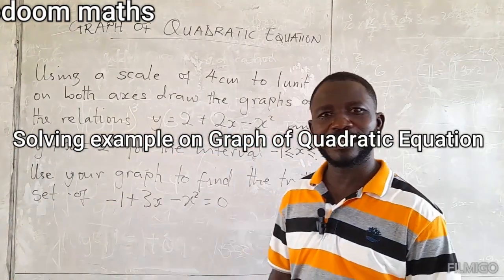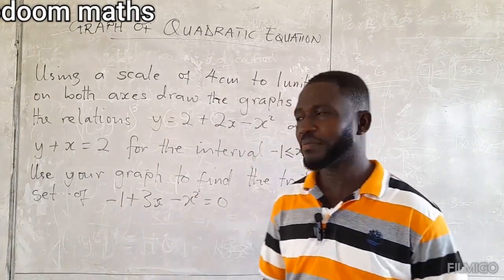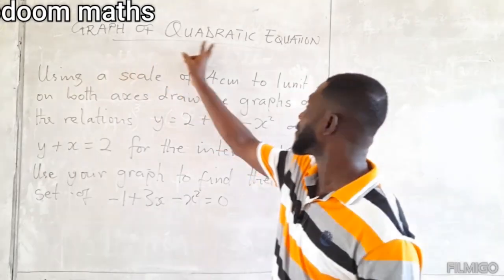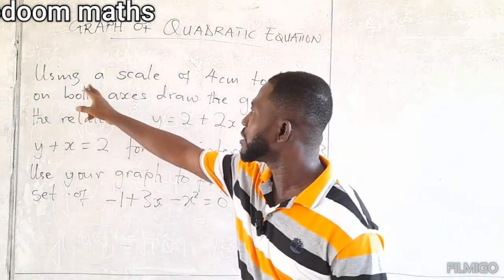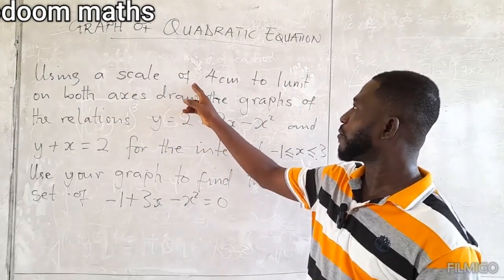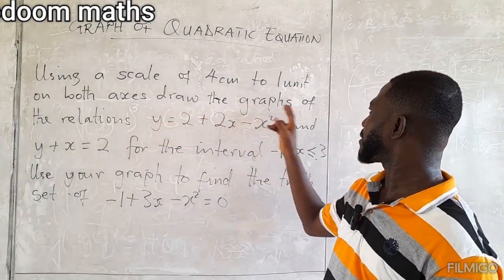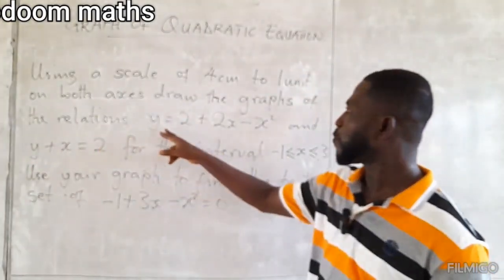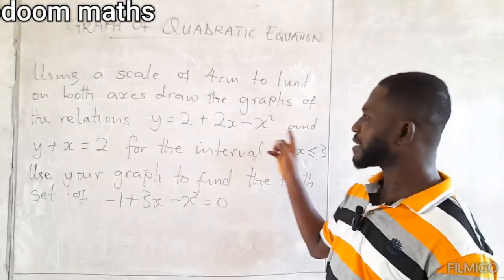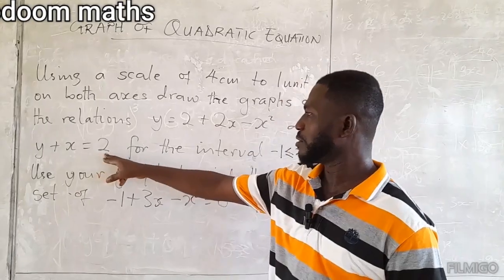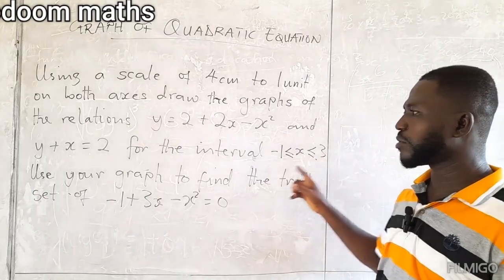Welcome. This is Odoo Mats. We want to continue our lesson on the graph of quadratic equations. Today we are looking at this example: using a scale of 4 centimeters to 1 unit on both axes, draw the graphs of the relations y equals 2 plus 2x minus x squared, and y plus x equals 2, for the interval negative 1 less than or equal to x less than or equal to 3.